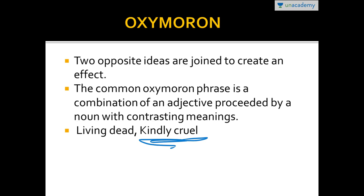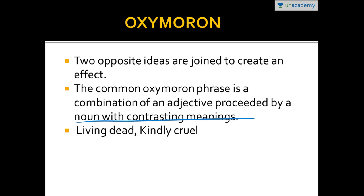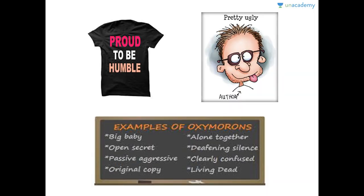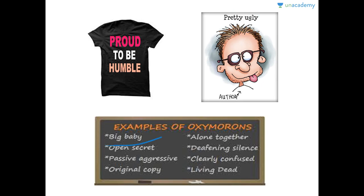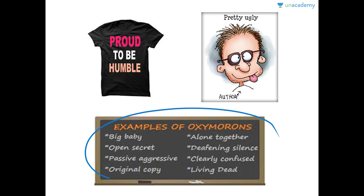A common oxymoron phrase is a combination of adjectives preceded by a noun of contrasting meaning, such as living dead or kindly cruel. Here are a few more examples: proud to be humble, pretty ugly, open secret, passive aggressive, original copy, alone together, deafening silence, clearly confused, living dead. All these are examples of oxymorons.